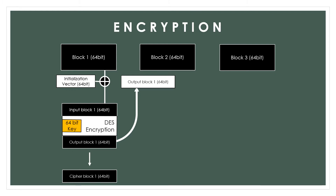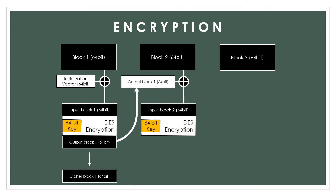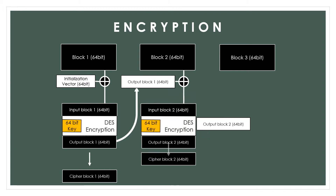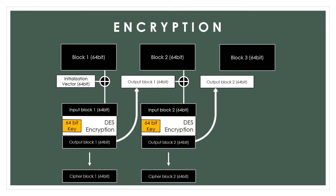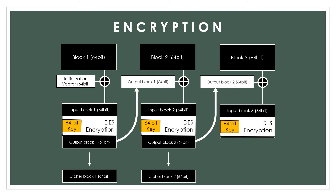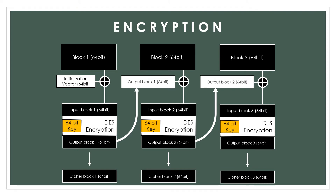For the following block of plain text, it is XORed with the cipher block of the previous step instead of the initialization vector. This step is repeated for the remaining blocks of plain text. Basically, in Cipher Block Chaining, each plain text block is XORed with the immediate previous cipher text block and then encrypted.